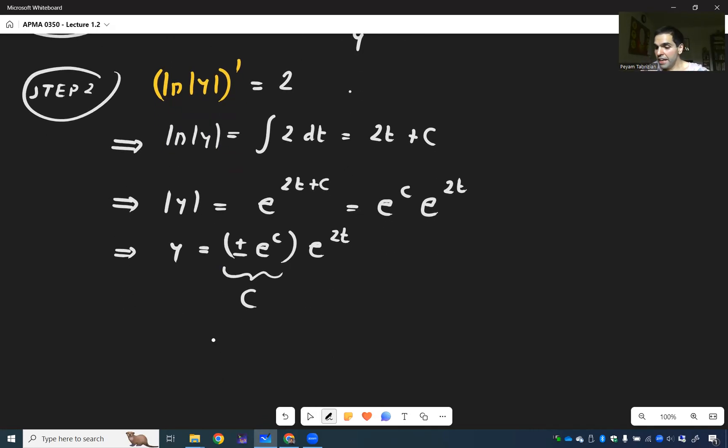And then in the end, what we get is that a function y of t is c e to the 2t. So, an exponential function.